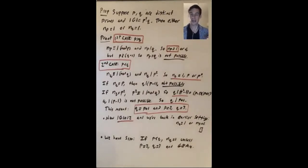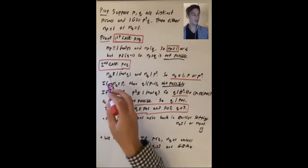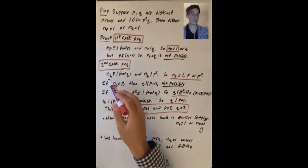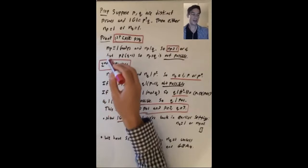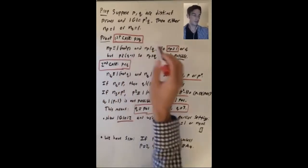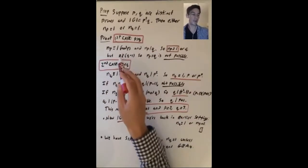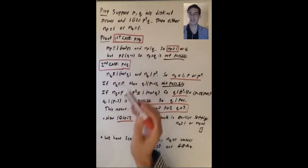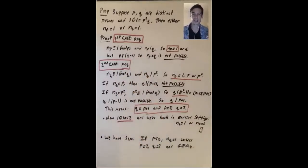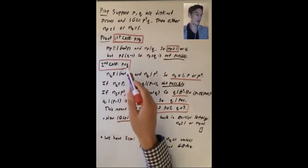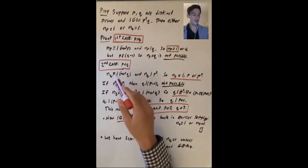The second case is more interesting. Let's suppose that p is smaller than q. So what do we know? Let's look at nq. If you look at np, you sort of end up back in the same place, but now p might divide q minus 1, and then we won't know what to say.